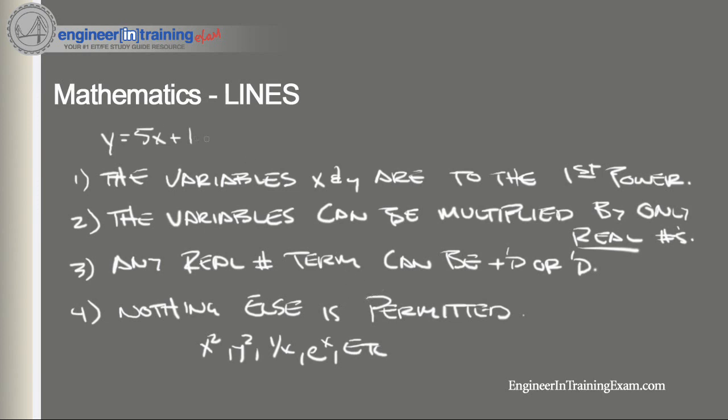So if you look back at our example here, this is an equation where x and y are both to the first power. The variables are multiplied by real numbers, and there's a real number that is added. So this equation adheres to all four rules and we can call it a linear equation or a line.